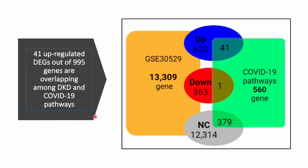As a result of our analysis, we observed 41 upregulated differentially expressed genes, or DEGs, out of 995 genes that are overlapping among diabetic kidney disease and COVID-19 pathways, as we can see in this picture.